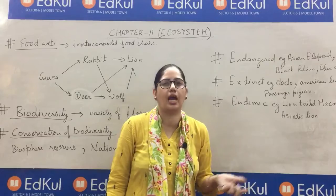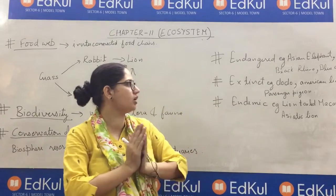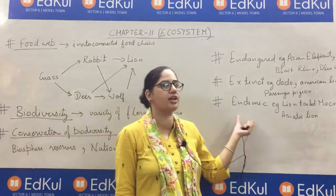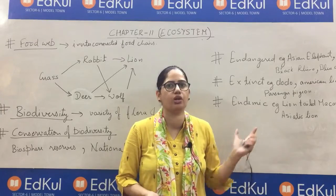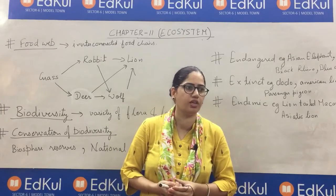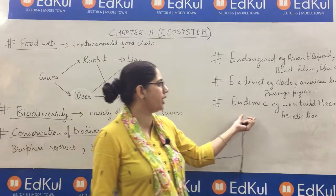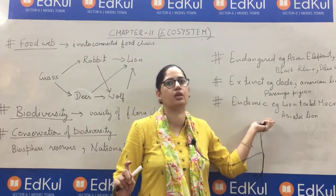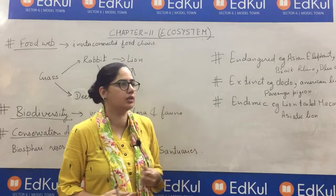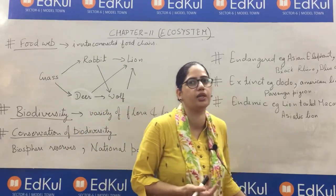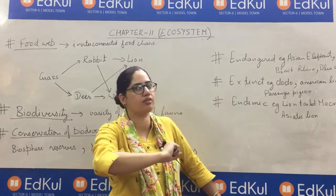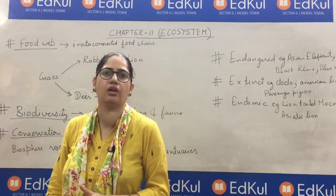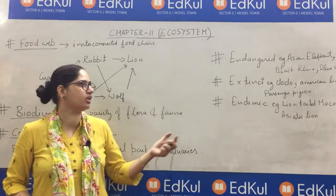Endemic animals are those which are only found in specific places. It is the duty of that nation — in which country these animals are found — to protect these endemic species, because they exist only in a specific country or area. For example, in India: lion-tailed macaque and Asiatic lion. These are only found in India, so it is the responsibility of India to save these animals.